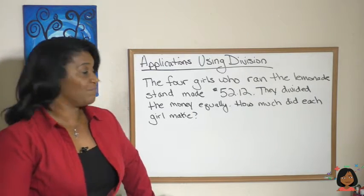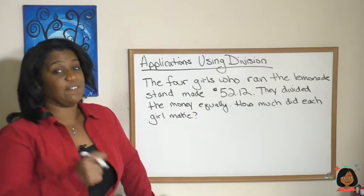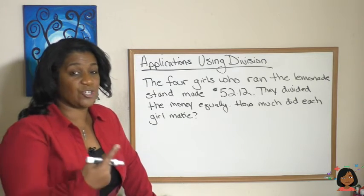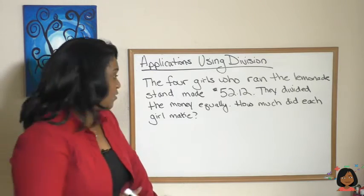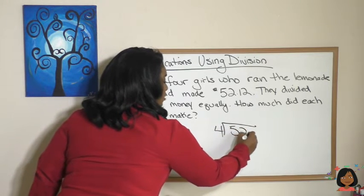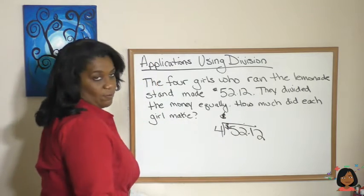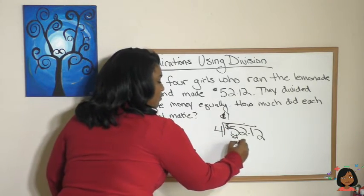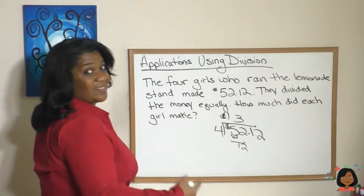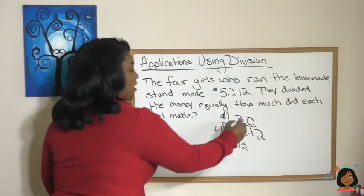Let's try this last example: the four girls who ran the lemonade stand made fifty-two dollars and twelve cents. They divided the money equally — so how much did each girl make? Let's set up the division problem: four into fifty-two dollars and twelve cents. Four goes into five one time, four goes into twelve three times, four goes into one zero times, then four goes into twelve three times again.